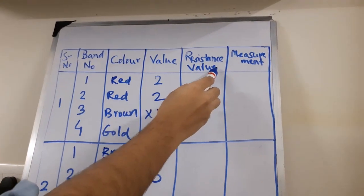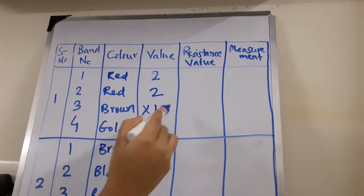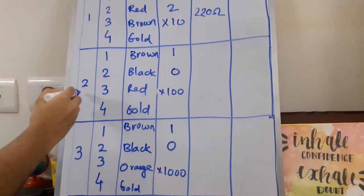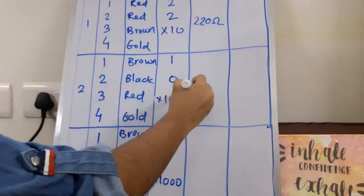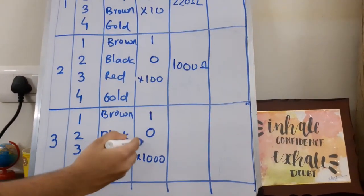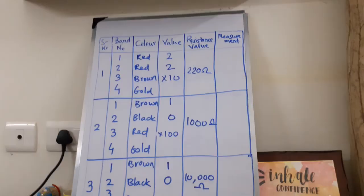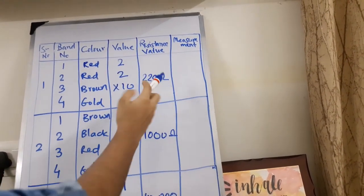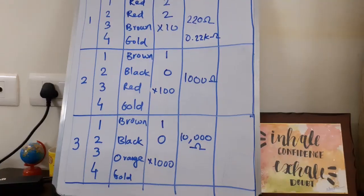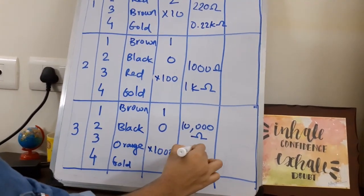Now let us calculate the resistance value in ohms. For the first resistor, it is 22 times 10, which is 220 ohms. In the same way for the second resistor, it is 10 times 100, which is 1000 ohms. And for the third resistor, it is 10 times 1000, which is 10,000 ohms. I can also say that 220 ohms is 0.22 K ohms. In the same way, 1000 is 1 K ohm and 10,000 is 10 K ohms.